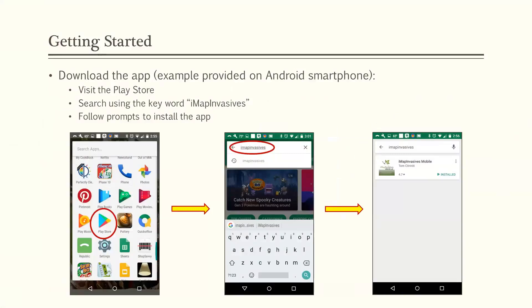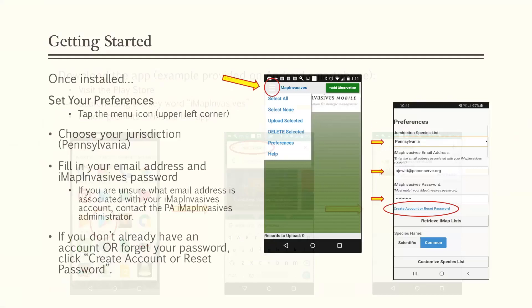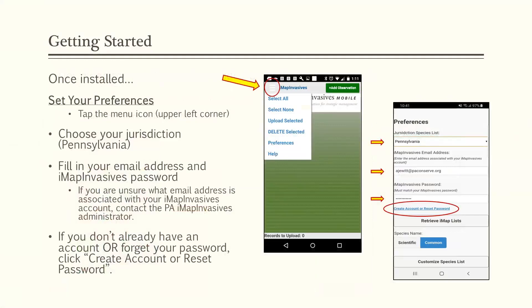Once you have the app installed, before adding data you'll want to set your preferences. Tap the menu icon in the upper left-hand corner and choose your jurisdiction — for most of you that's going to be Pennsylvania. Then fill in your email address and your iMapInvasives password. With the new platform, your email address is actually your username and you'll reset your password upon first login.